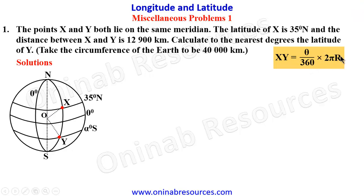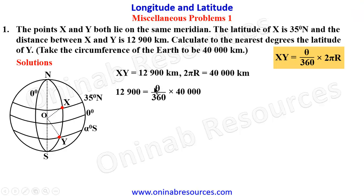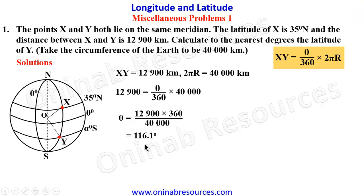We know that XY is 12,900 kilometers and 2πR, the circumference of the Earth, is 40,000 kilometers. Substituting into the formula: 12,900 = (theta / 360) × 40,000. Making theta the subject gives us theta = (12,900 × 360) / 40,000, which simplifies to 116.1 degrees.